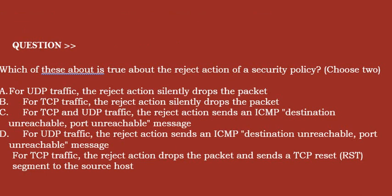Next question: Which of these is true about the reject action of a security policy? Choose two options. Option A: for UDP traffic, the reject action silently drops the packet. Option B: for TCP traffic, the reject action silently drops the packet. Option C: for TCP and UDP traffic, the reject action sends an ICMP destination unreachable port unreachable message.